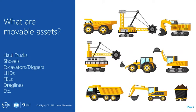Movable assets are haul trucks, shovels, excavators or diggers, LHDs (load haul dump machines), front end loaders, drag lines, and so forth. The load and haul operation can be seen as a continuous cycle made up of different production steps. The cycle runs from where a truck gets loaded and hauls material — previously fragmented by drilling and blasting — to the next stage in the value chain, typically a crusher or stockpile feeding a processing plant.